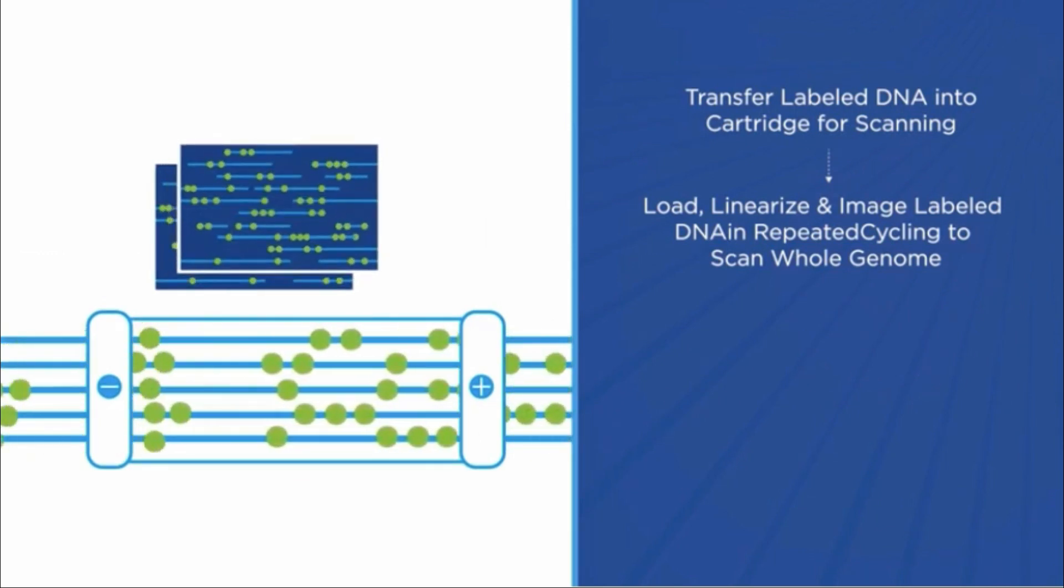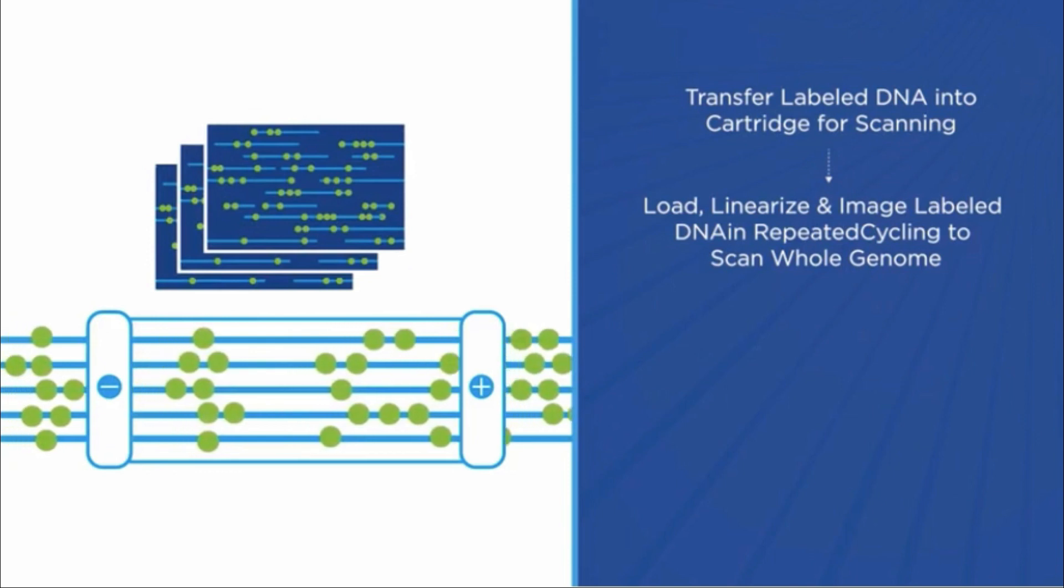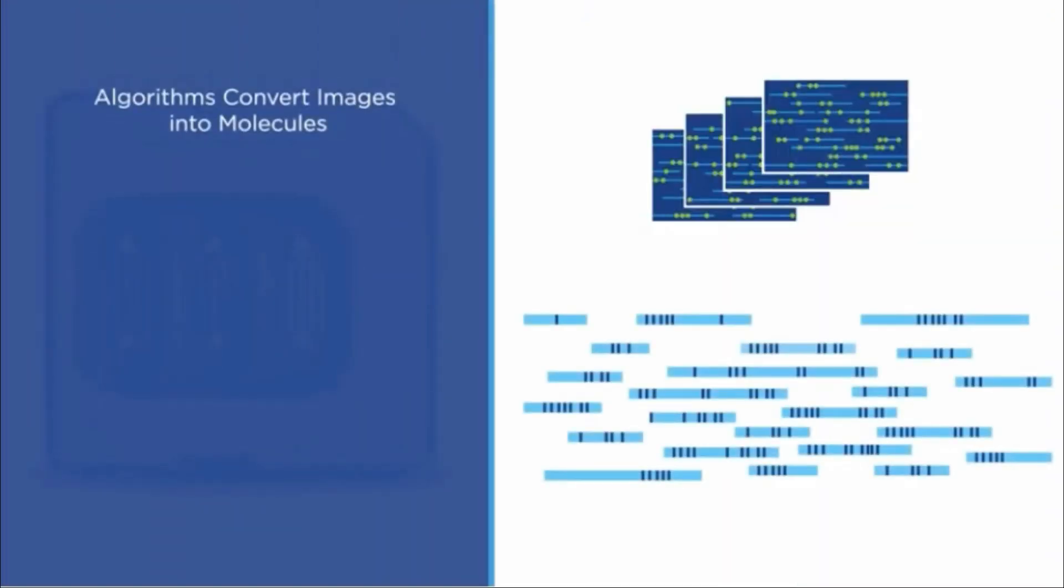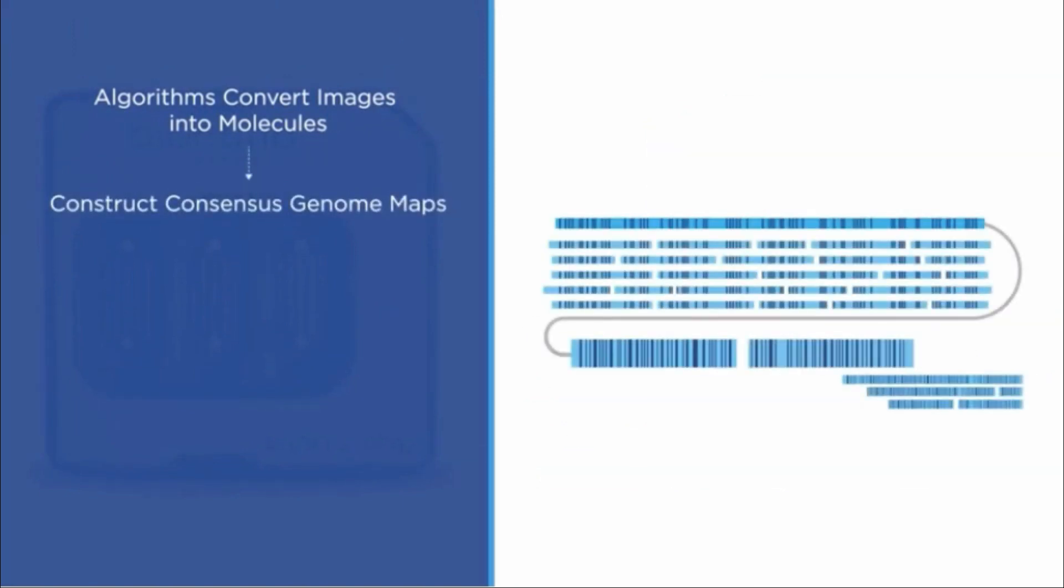By capturing these images in repeated cycles across the hundreds of thousands of nanochannels on the chip, all the images necessary to assemble a map of an entire genome are captured. Algorithms extract molecules from the images, and then BioNano algorithms construct consensus genome maps.